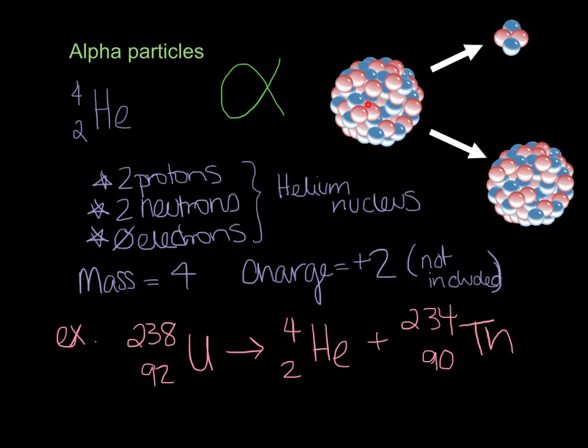The original is called the parent nucleus, and the products are called daughter nuclei. This small substance is our alpha particle. And it's the nucleus of a helium atom. So it has two protons and two neutrons. Its mass is 4 and it generally has a charge of positive 2, but we don't include that in the notation.